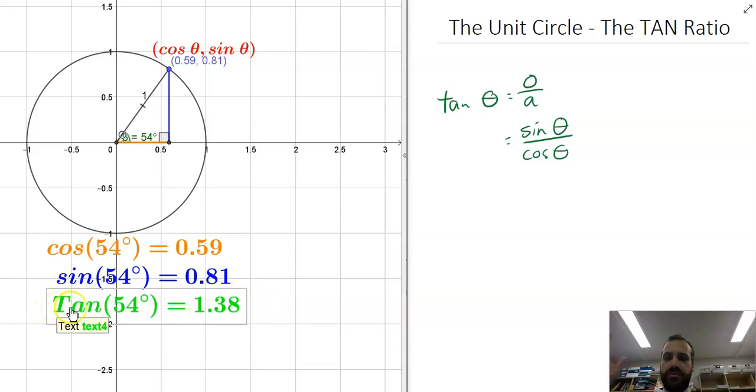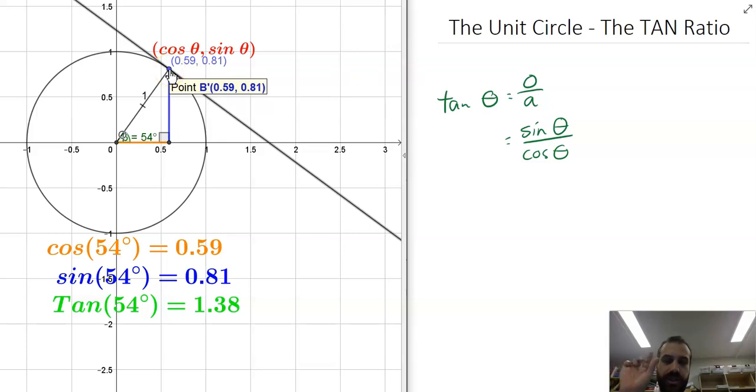So it's called the tan ratio for a reason, actually. It's because you can draw a tangent to this circle, like that. Now that tangent just means that it's just touching the circle, and it's passing through that little dot there. Now we're only interested in a particular segment of that tangent. It's the distance from the dot to this guy here. And that is 1.38.